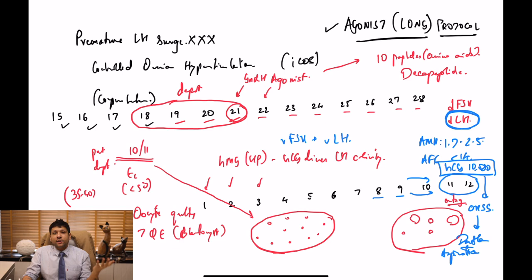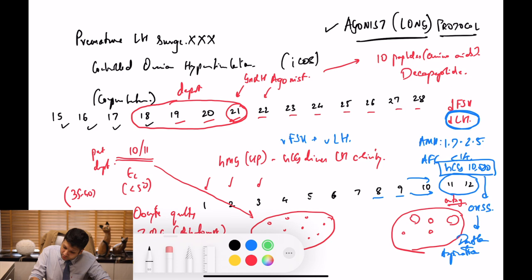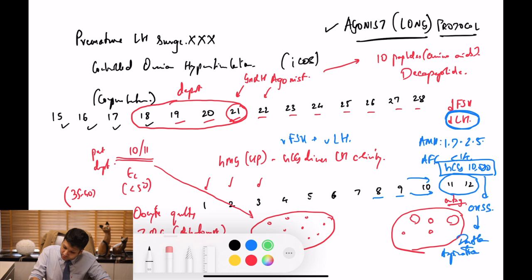The one patient in whom we do not use the agonist protocol is in patients with PCOS. This is our strict note at our place. We do not do batch IVF, but for people who like to do batch IVF, long protocol is going to be pretty good.